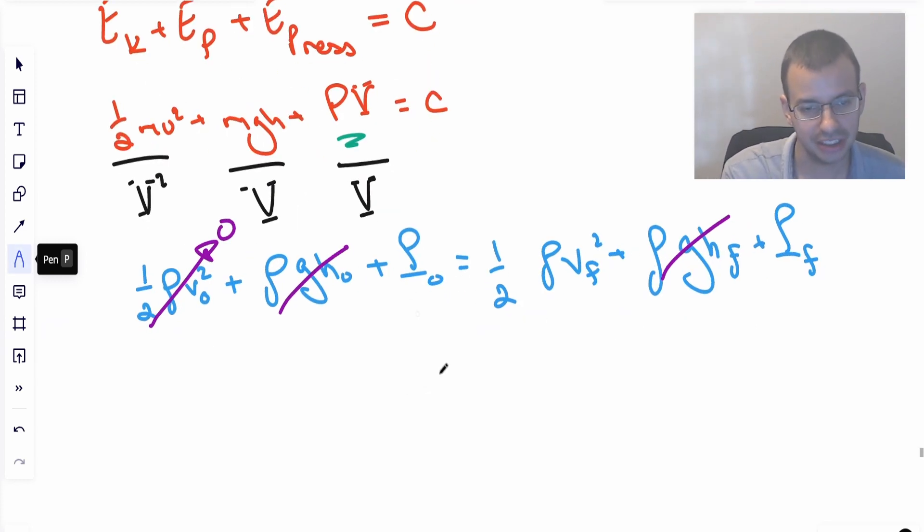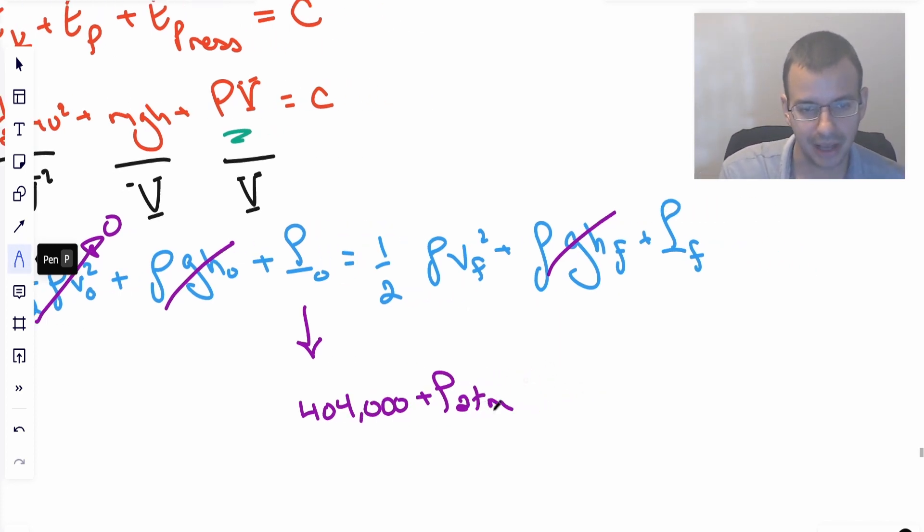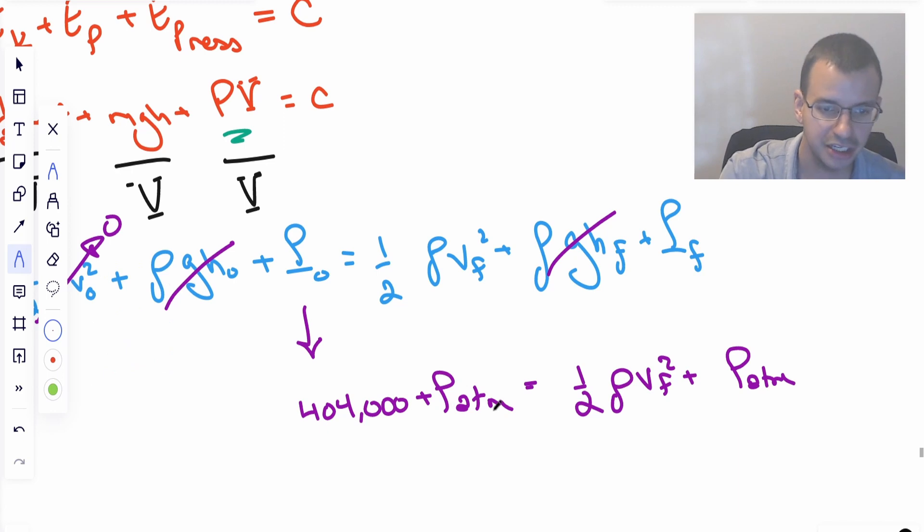We're left with initial pressure and final pressure and this term right there. So I'm going to write this then as 404,000 pascals plus pressure atmosphere, which is about 14.7 psi or 101,000 pascals, equals one half rho v final squared plus, and the pressure outside the pipe is going to be pressure atmosphere, which is convenient, which is why I left it on both sides, because it's going to cancel.